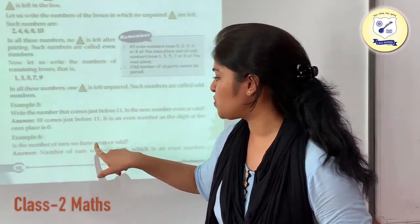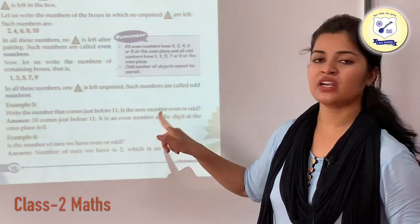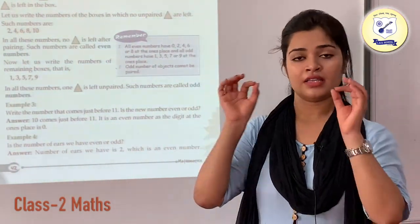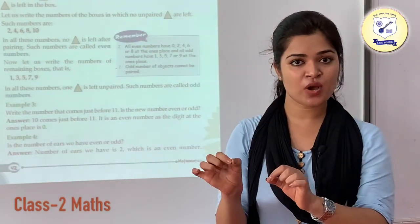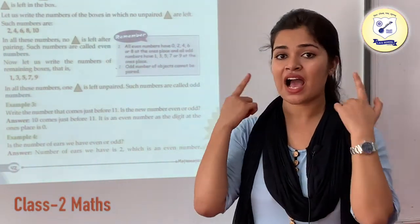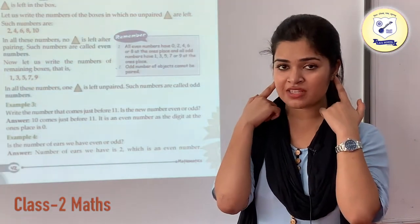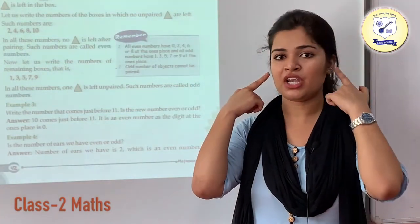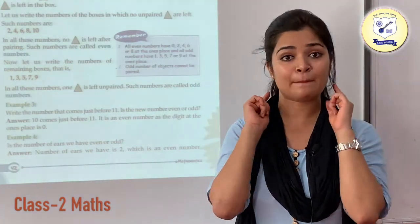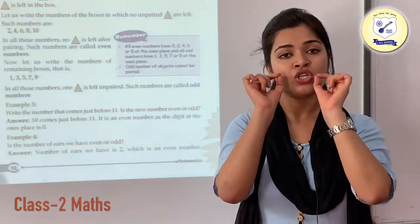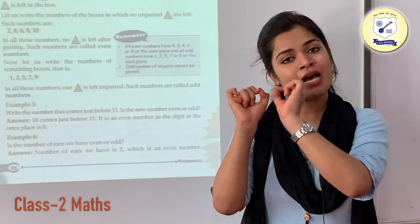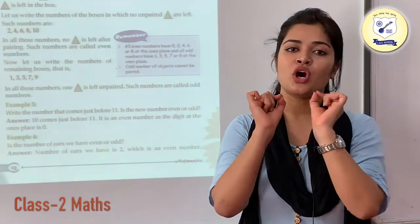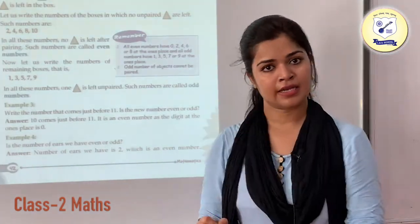Is the number of ears we have even or odd? Since we are having 2 ears — 1 and 2 — and we are having a pair of them, this is again going to be your even number.